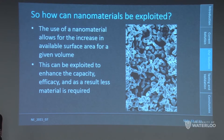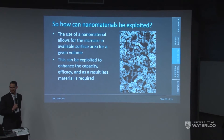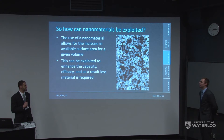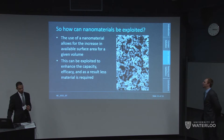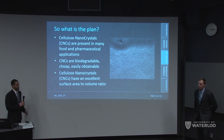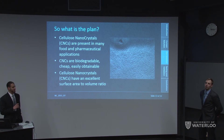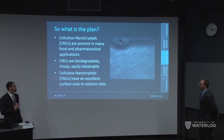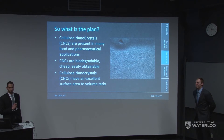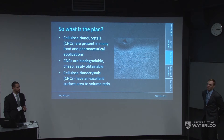We know that we can exploit nanomaterials for their high surface area to volume ratio, which would enhance capacity and efficacy, requiring less material to undergo the exchange. Cellulose nanocrystals (CNCs) were introduced to us in our 3B year. They are present in many food and pharmaceutical applications, are biodegradable, cheap, and easily obtainable, and have a very high surface area to volume ratio — approximately 200 to 600 meters squared per gram, depending on the fabrication method.